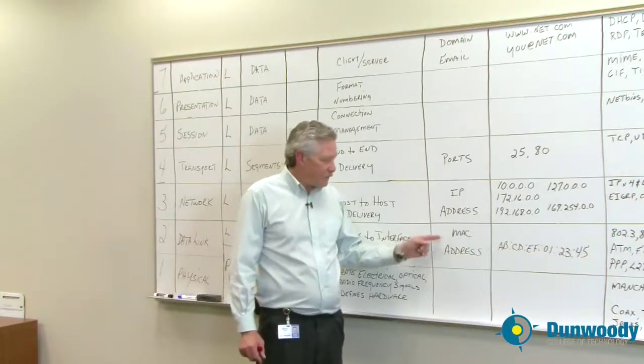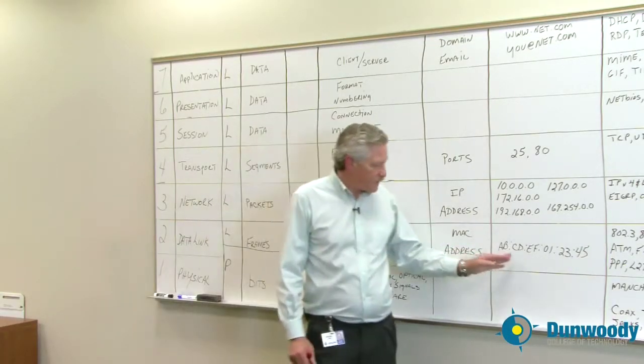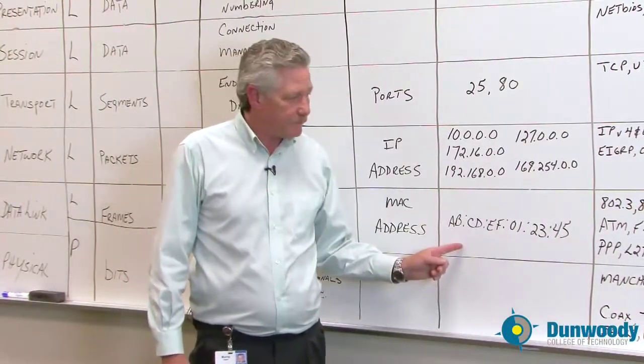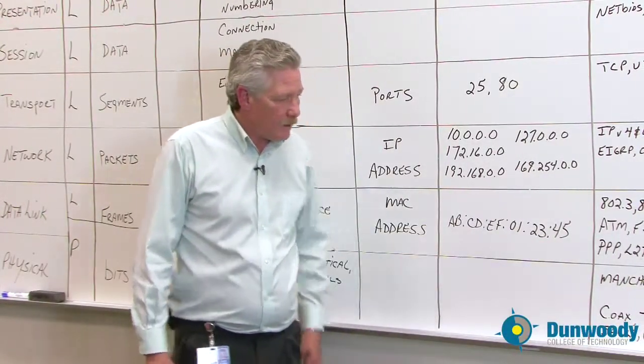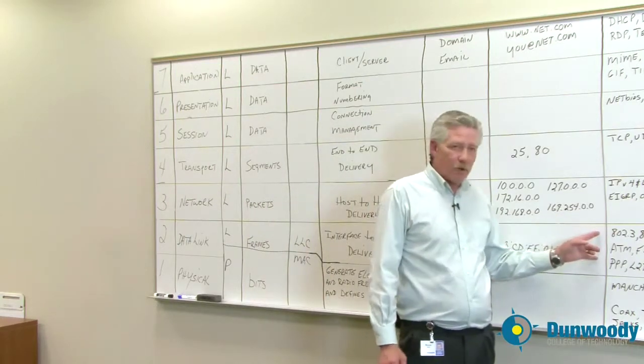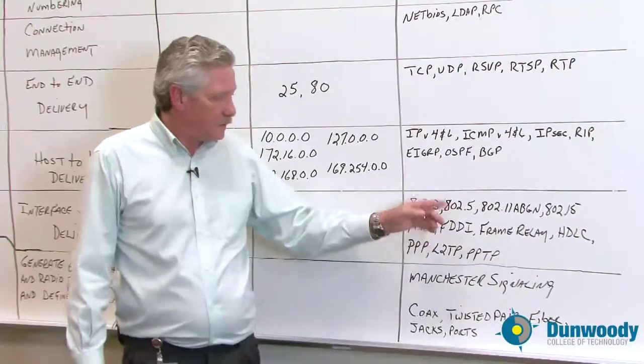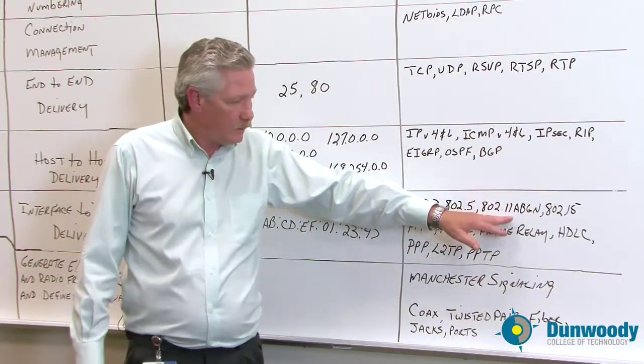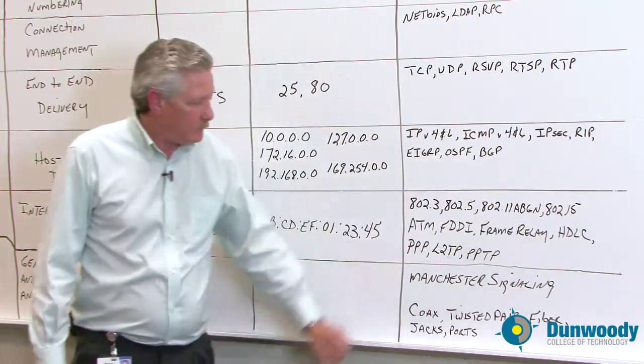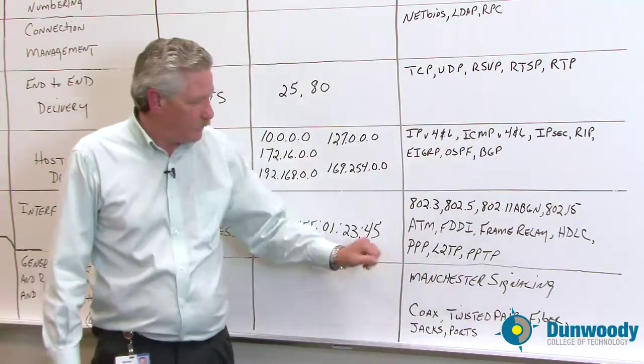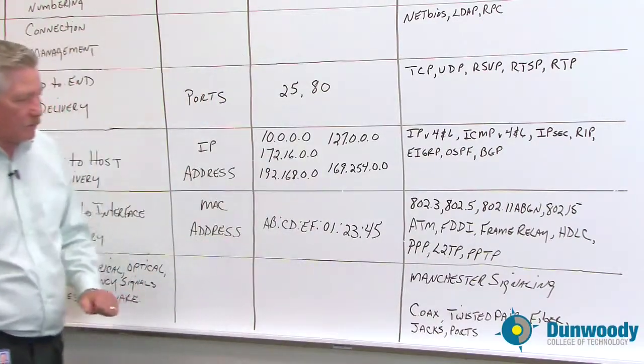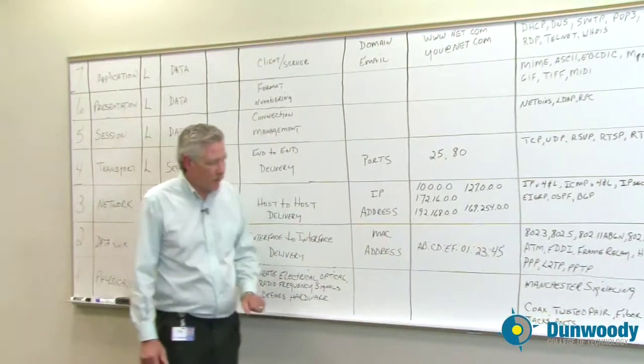The data link layer uses the MAC address, which is a six octet number looking similar to this. And this is where protocols such as Ethernet, token ring, wireless A, B, G, and N, Bluetooth, ATM, point to point tunneling are all locked into.